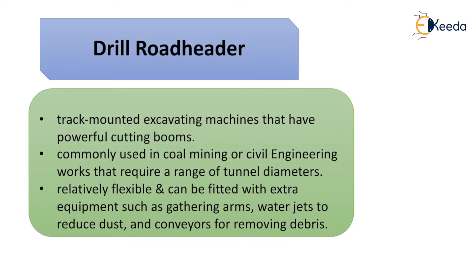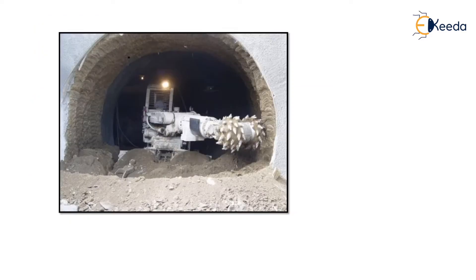Next is the road header. These are track-mounted excavating machines that have powerful cutting heads. These were commonly used in coal mining or in civil engineering construction works that require a range of tunnel diameters. They are relatively flexible and can be fitted with extra equipment such as gathering arms, water jets, and conveyors. Water jets are used to reduce dust, and conveyors are used for removing the debris.